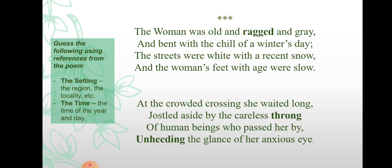In the next line, 'The streets were white with a recent snow,' the figure of speech is alliteration. Why alliteration? The sound of the letter S is repeated for poetic effect. Also, the sound of the letter W is repeated — 'were white with.' So the figure of speech is alliteration.